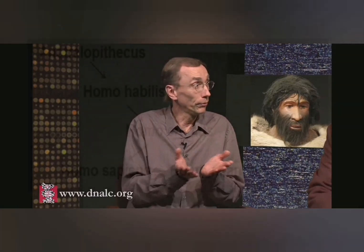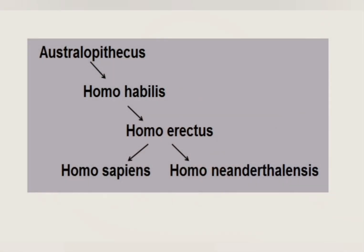Some scientists say Neanderthals are completely human or very closely related, while others say the missing information makes them a completely different species. The debate will continue because no one was there to know the facts. We will study human ancestry according to this flow diagram, as it reflects what the South African syllabus requires. According to this, Homo sapiens and Homo neanderthalensis are related but not the same species.